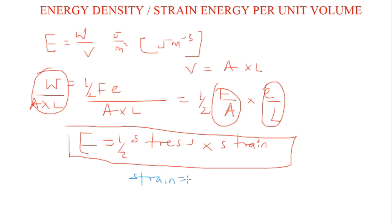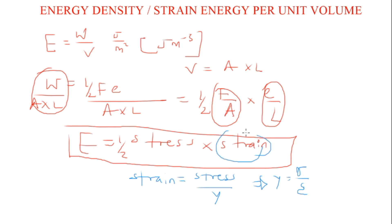Strain is the same as stress over Young's modulus, because Young's modulus is defined as stress over strain. So if I make strain the subject and substitute it into the energy density formula, I get energy density e equals half of stress multiplied by stress over Young's modulus.